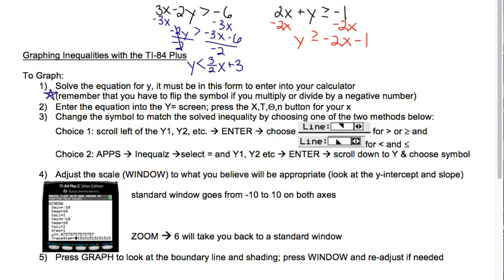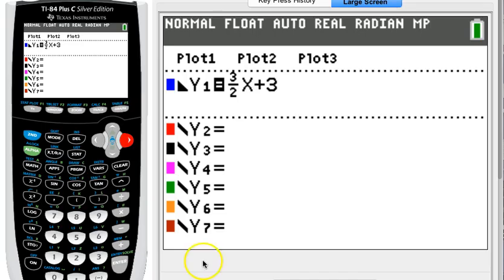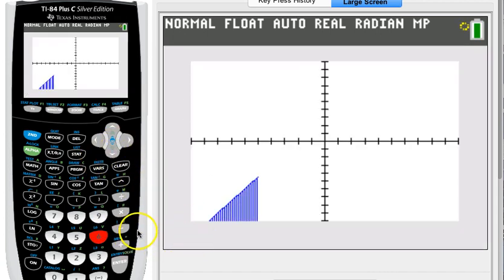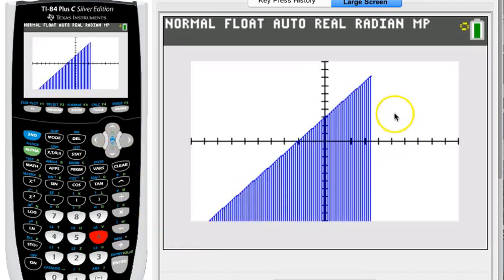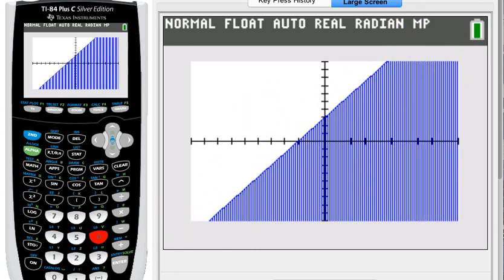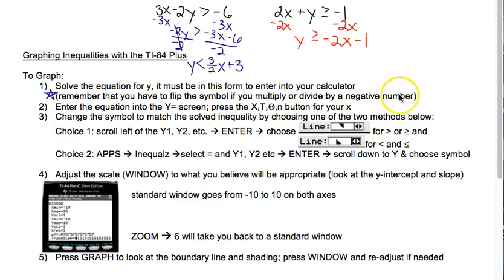Next thing that we should do is adjust our scale. We always do that before we graph anything. I'm going to go ahead with a standard window because my y-intercept is 3 and a slope of 3/2, I shouldn't need any crazy windows. So I'm just going to press zoom 6 to make sure I go to standard window. And then notice that in my lovely blue color it shades and does the boundary for me.